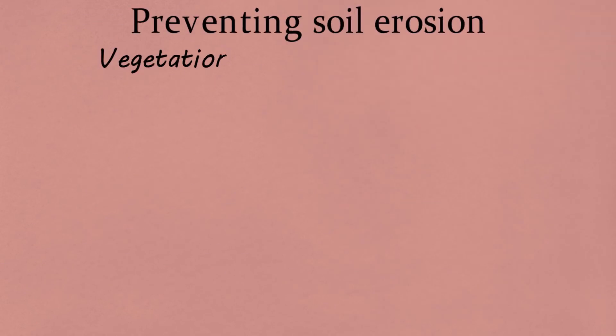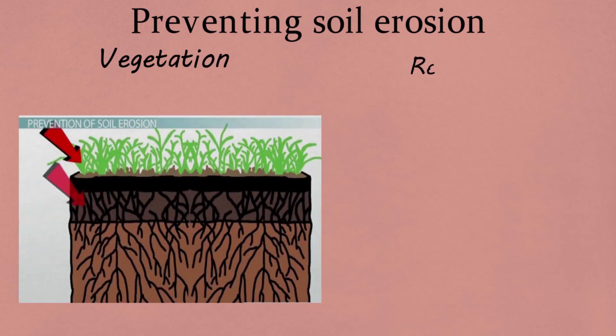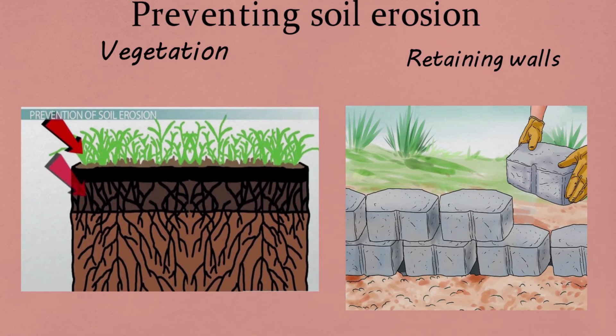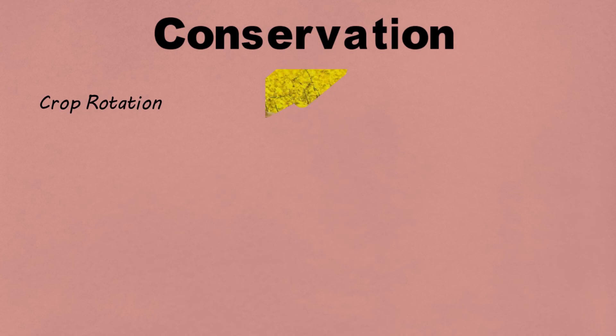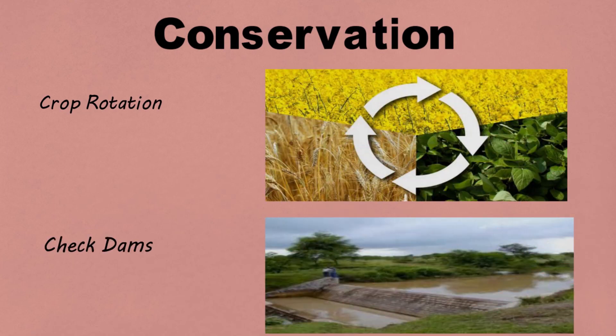From vegetation, roots will tighten the soil. Walls and roots will not allow soil to erode off. Crop rotation will enrich the nutrients in soil. Check dams prevent gully erosion.